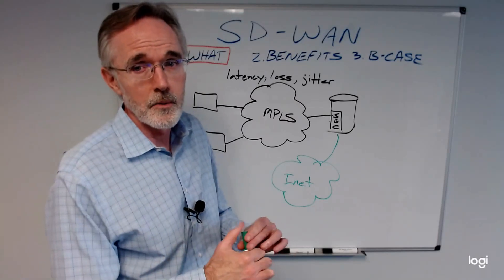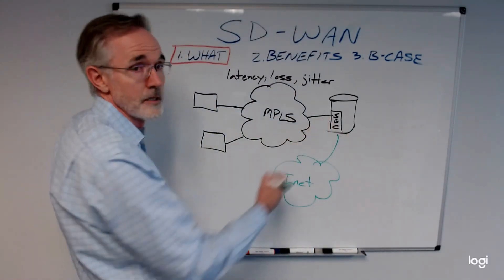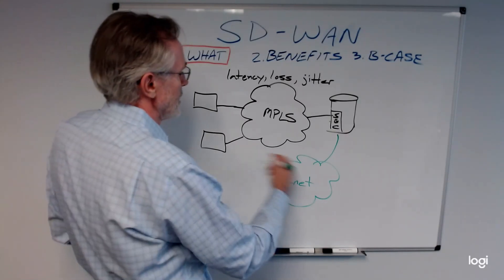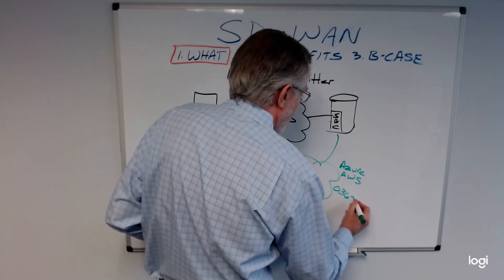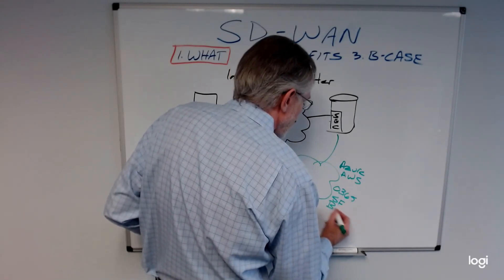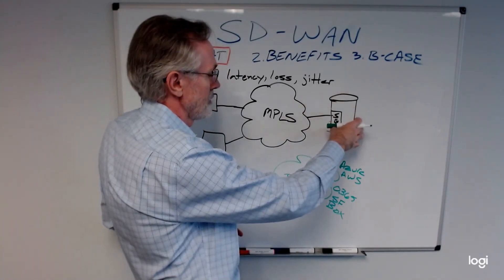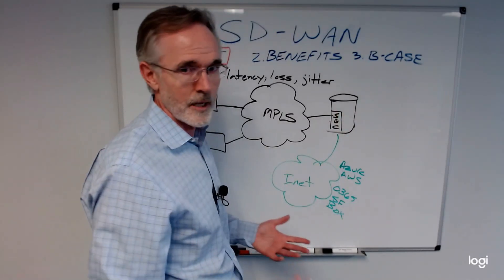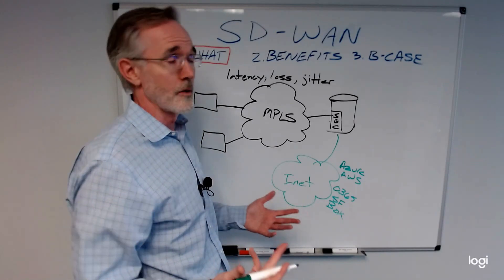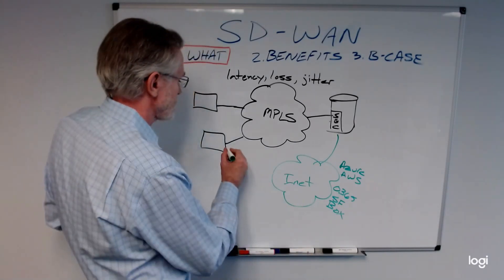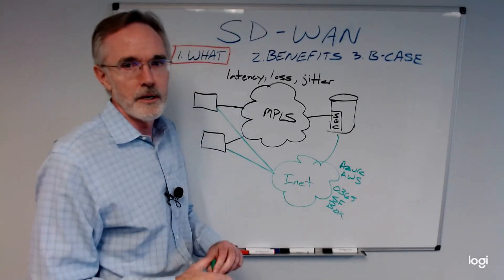What's really been transforming the way we network today is all the applications living out in the cloud. Our users really aren't going to the data center as much as they had in the past — they want to go to Azure or AWS, access things like Office 365, Salesforce, or Box, and any of the other SaaS applications out there. Today they need to go through your central security platform at the data center to access these applications, which creates latency, congestion, and points of failure. SD-WAN tries to allow end users to connect directly to the internet to access those services.